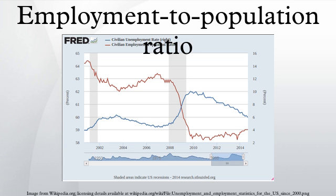Multiple Job Holders: these are employed persons who have two or more jobs as a wage and salary worker, are self-employed and also held a wage and salary job, or work as an unpaid family worker and also hold a wage and salary job. Use: the ratio is used to evaluate the ability of the economy to create jobs and therefore is used in conjunction with the unemployment rate for a general evaluation of the labor market stance.